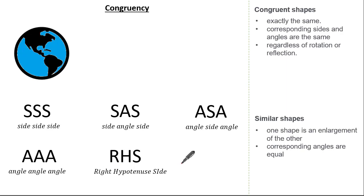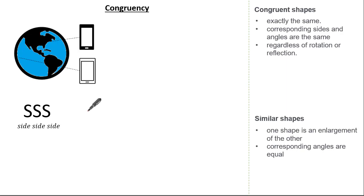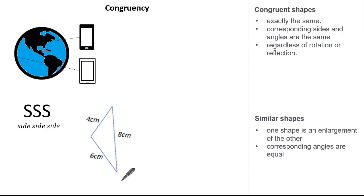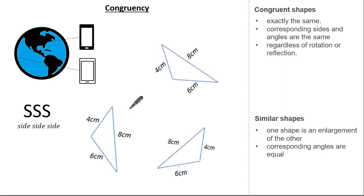Let's start with side side side. Pretend you call your friend from across the world and you ask them to draw a triangle, but the only information you give them is a side, a side, and a side — say a 4cm, 6cm, 8cm triangle. What they will draw is the exact same triangle as you. It may be rotated or reflected, but without a doubt it will be congruent. So the condition of side side side will always give a congruent shape.